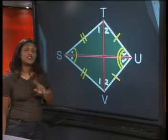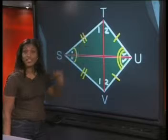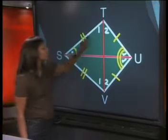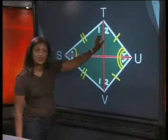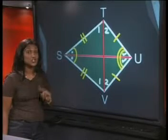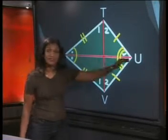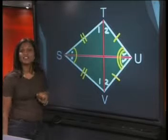Now be careful, we have not proved anywhere that these two angles are equal. So we cannot say that angle T1 is equal to angle T2, even if they sometimes look like it. So only this diagonal bisects the vertex angles of the kite.